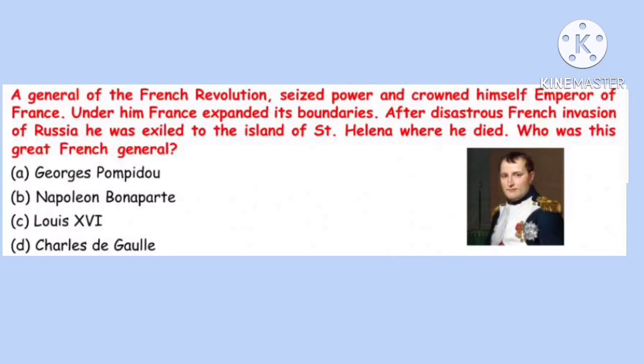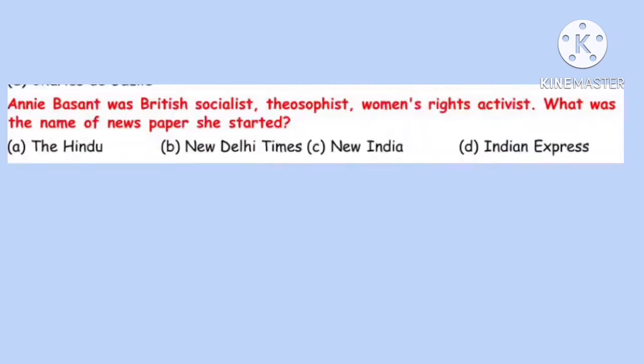Question 15. A general of the French Revolution seized power and crowned himself emperor of France. Under him, France expanded its boundaries. After the disastrous French invasion of Russia, he was exiled to the island of Saint Helena where he died. Who was this great French general? Correct option is B: Napoleon Bonaparte.